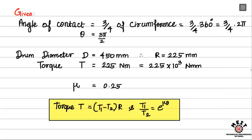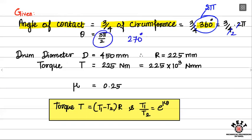Let me take out the given data. First, the angle of contact - the band covers 3/4 of the circumference. Circumference is 360 degrees, so 3/4 of circumference is 270 degrees. In radians, that is 3/4 into 2π, which simplifies to 3π/2. Whenever we calculate the theta value, it will be in radians. So theta equals 3π/2.